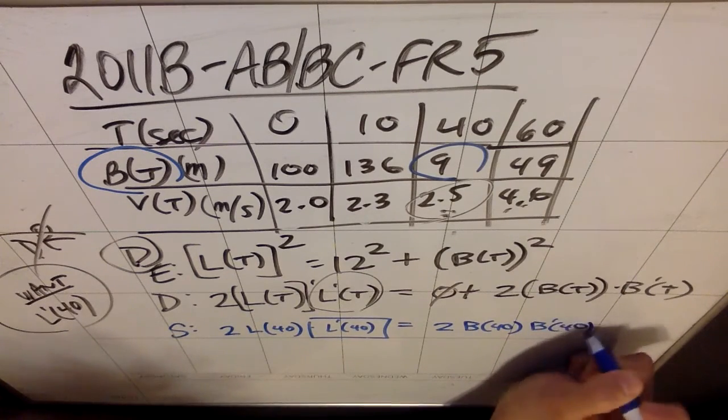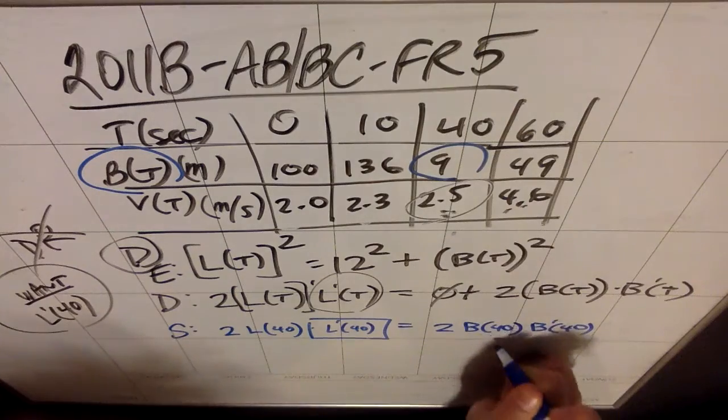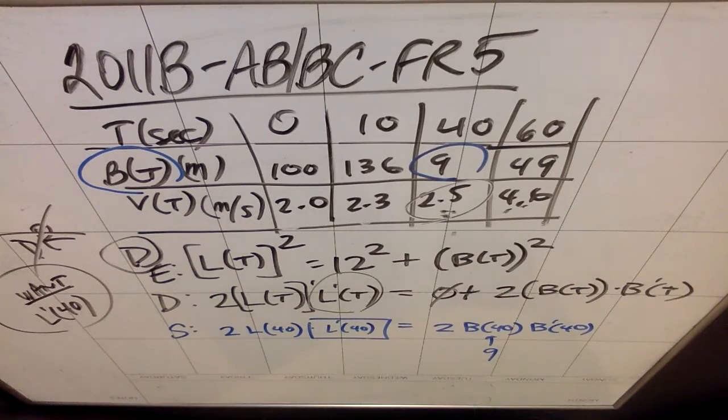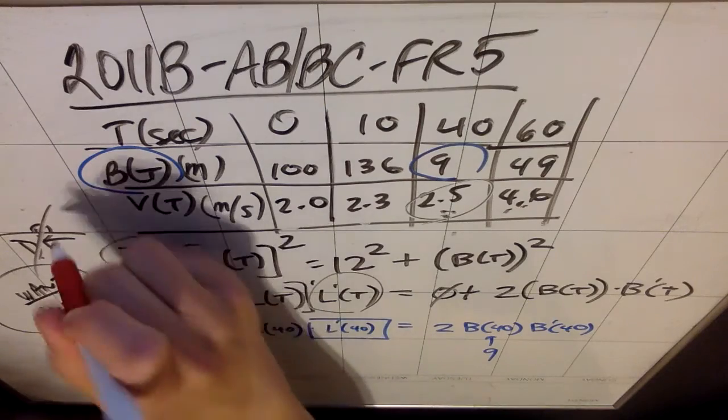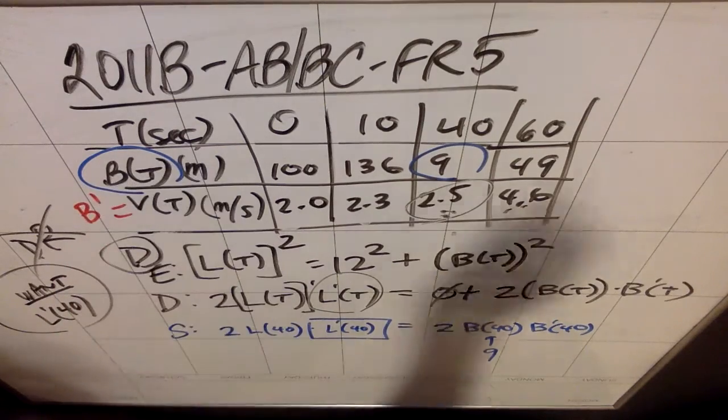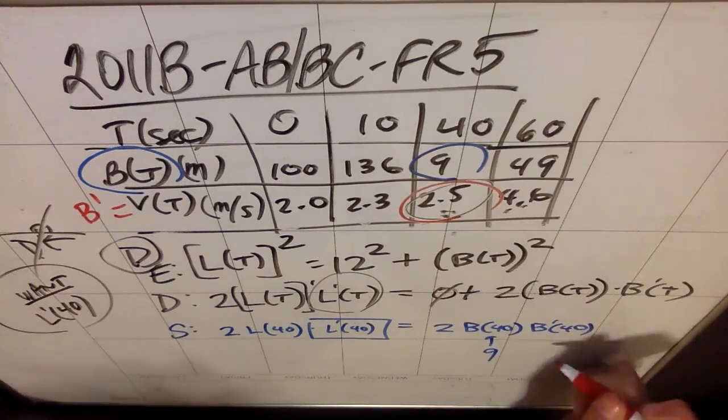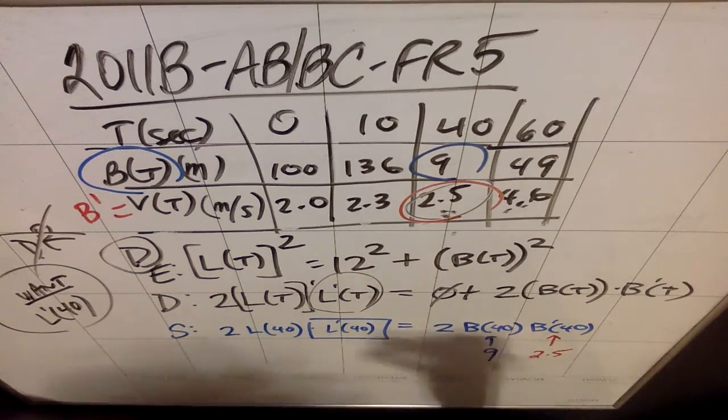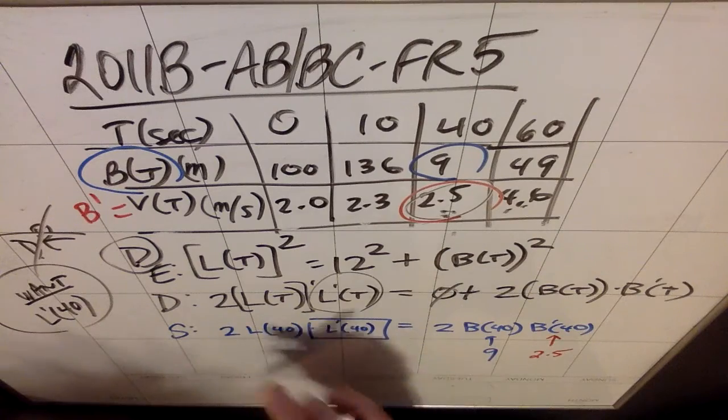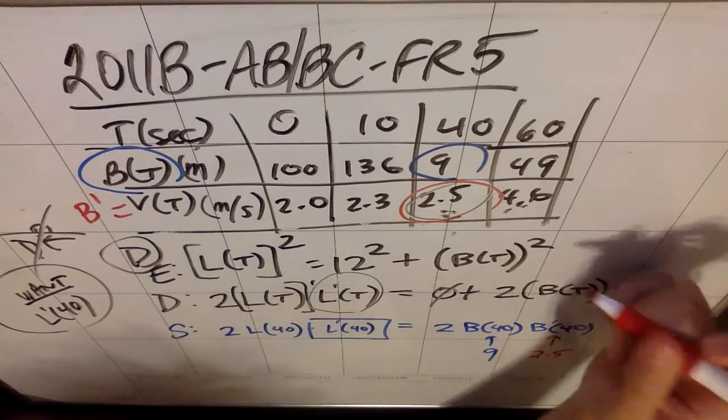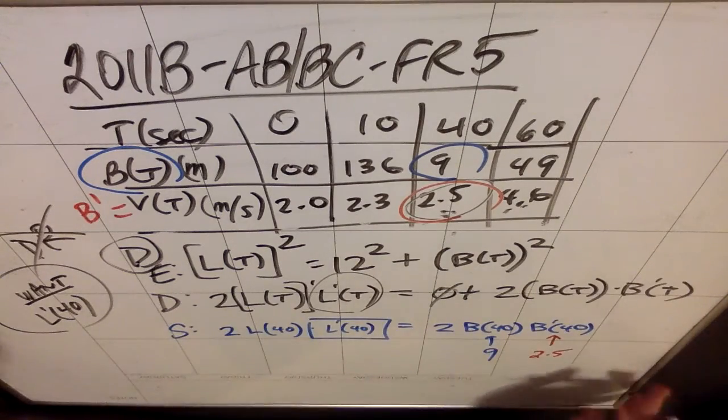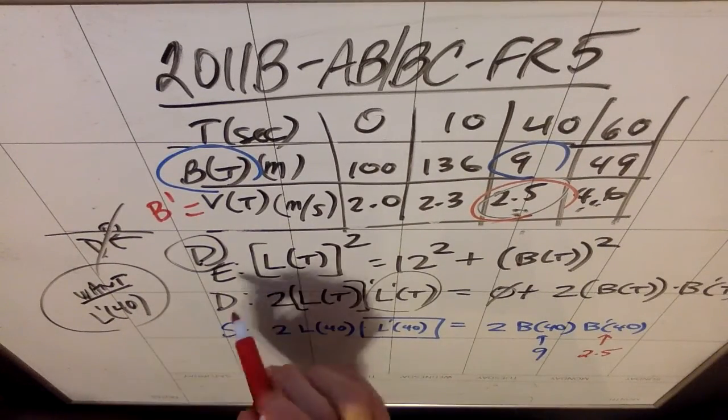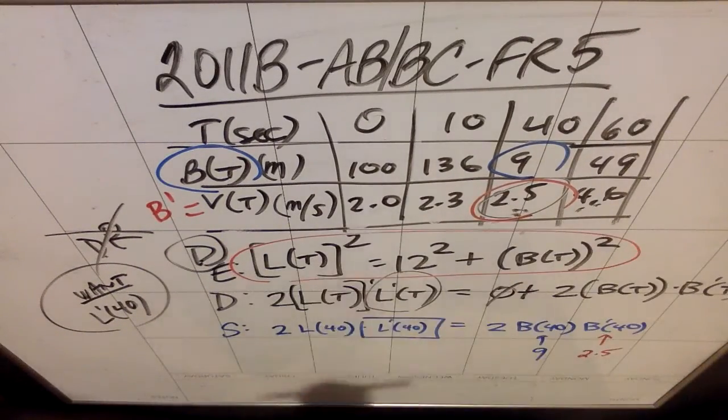You might say, oh, but you don't know L(40). But I would argue that I do know L(40), because if I go back to this original equation that I was given for L, I know that this would give me a way to find L(40). L(40) quantity squared equals 12 squared plus B(40), which we have established is 9, squared.